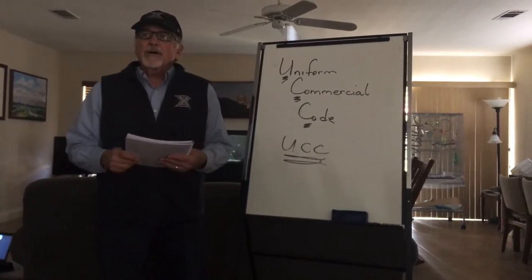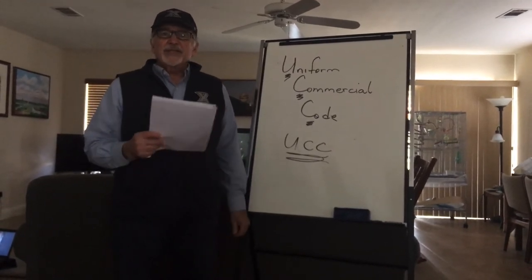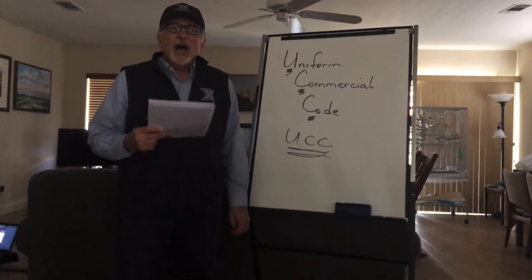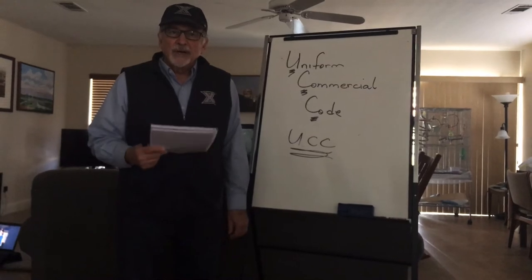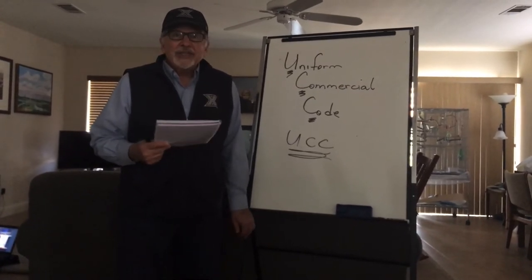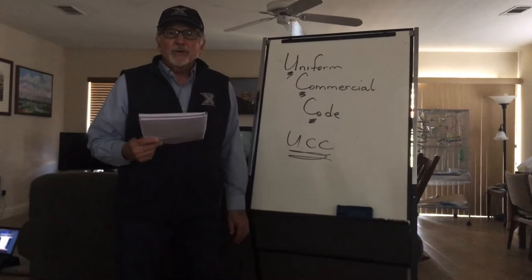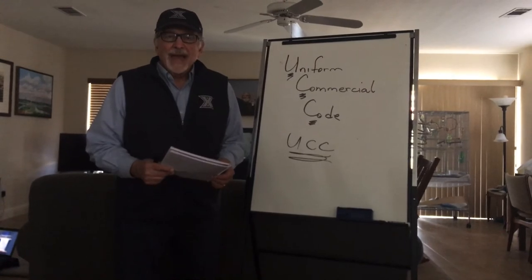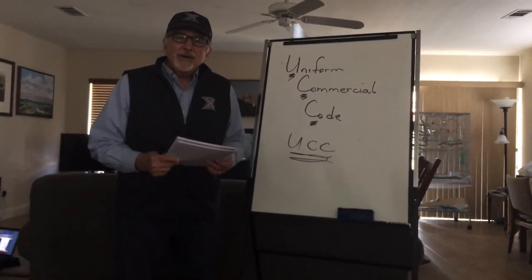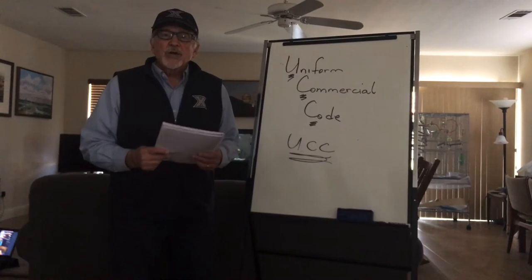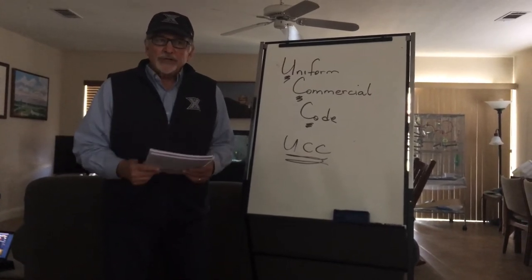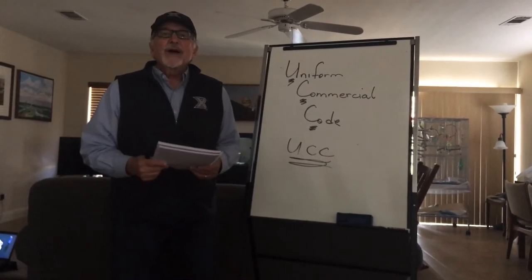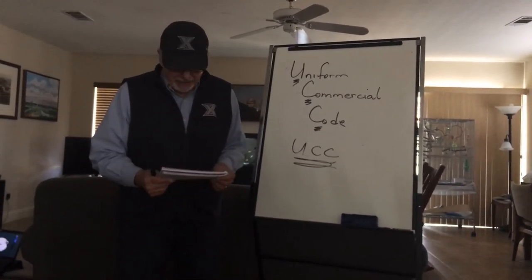Another thing that's extremely important in the Uniform Commercial Code is the phrase 'unless otherwise agreed.' Merchants or anybody selling movable tangible goods is free to put virtually anything they want to in their contract. But if you don't put it in your contract, the Uniform Commercial Code controls. The phrase 'unless otherwise agreed' means that you can do what you want to in your contract, as long as the other side agrees.